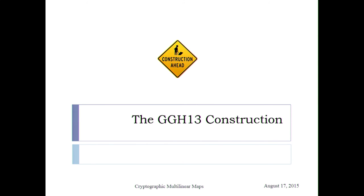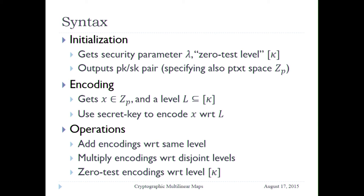Let me describe the GGH13 construction. The construction works in a cyclotomic ring — for most purposes you can think of it as the ring of integers; I'll say explicitly when things don't behave that way. You need a high-dimension ring to protect against lattice attacks. We work with the ring mod q, where q is large — think sub-exponential in your security parameter. The secret is random elements in the ring mod q, plus an additional small element g. The plaintext space is the quotient ring R over gR — you can choose g so that quotient ring is isomorphic to the field with p elements, and p is not made public.